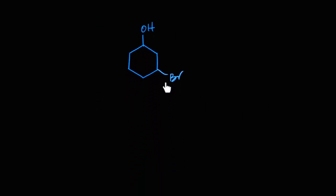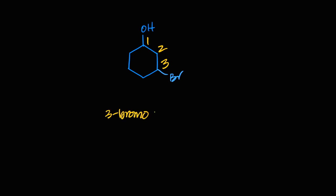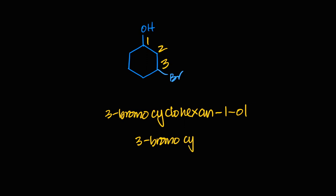For cyclic alcohols with a branch or halogen, the OH gets the priority and is carbon one. Counting one direction, bromine gets position five; the other direction, it gets position three. Three wins, so this is 3-bromocyclohexanol. You only need to number the OH position if there are two of them; one OH is always position one and doesn't need to be written.